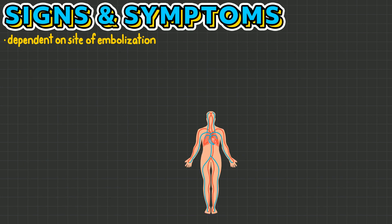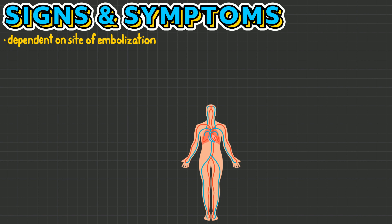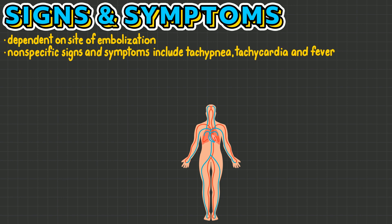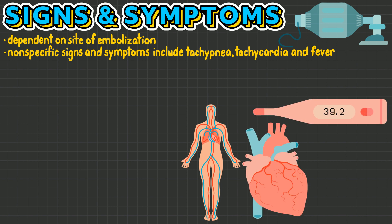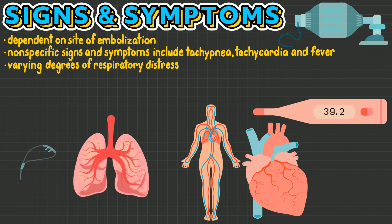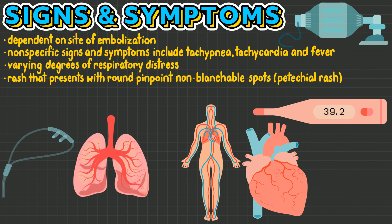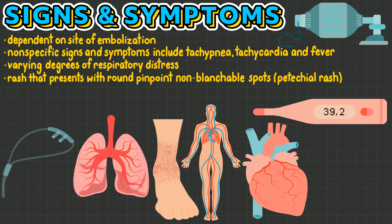Signs and symptoms of fat embolism syndrome are dependent on the site of embolization. Some non-specific signs and symptoms include tachypnea, tachycardia, and fever. When the lungs are involved, fat embolism syndrome may present with varying degrees of respiratory distress and poor oxygenation. If the skin is involved, a rash that presents with round, pinpoint, non-blanchable spots called a petechial rash may be present.